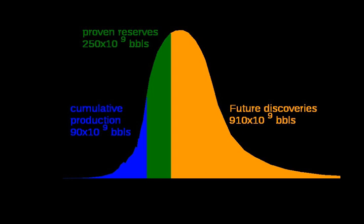Energy descent is the post-peak oil transitional phase, when humankind is predicted to move from the ascending use of energy that has occurred since the Industrial Revolution to a descending use of energy.